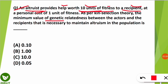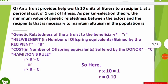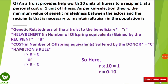The altruist gives 10 units of fitness at a personal cost of 1 unit of fitness. That means the donor is sacrificing their own fitness of value 1 but providing 10 units of fitness to the recipient. The question asks: what is the genetic relatedness between the actors and the recipients? To calculate this, there is a formula we need to know.